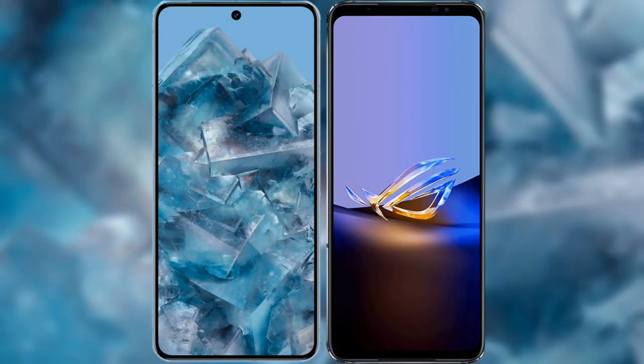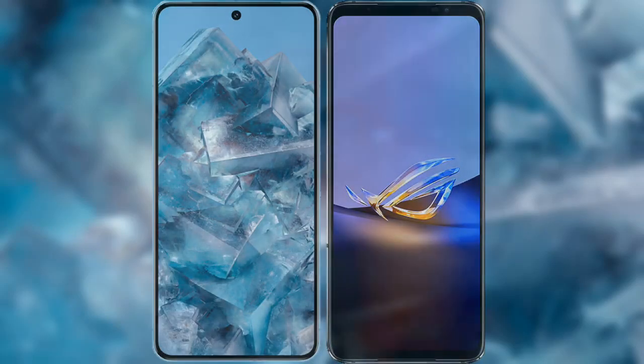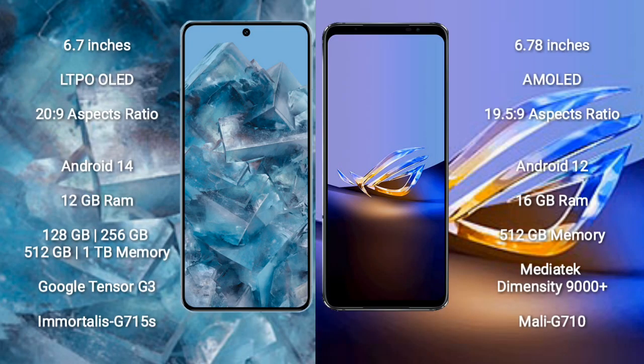I will compare the new Google Pixel 8 Pro with ASUS ROG Phone 6D Ultimate. Google Pixel 8 Pro comes with a 6.7-inch LTPO OLED display and 120Hz refresh rate. ASUS ROG Phone 6D Ultimate comes with a 6.78-inch AMOLED display and 165Hz refresh rate.